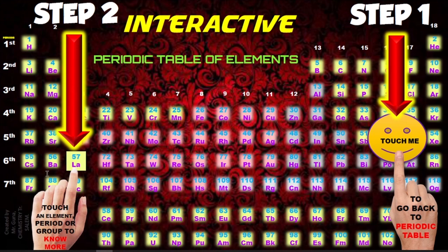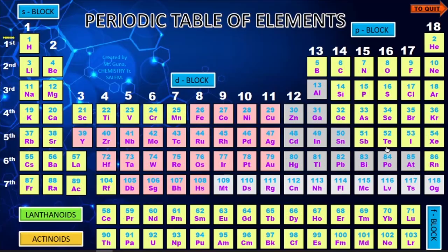When you open this periodic table PDF, you will be taken to the first page — the instruction page. The instructions are very simple. There are only two steps. Step one: click the 'Touch Me' smiley and it will take you to the main part of the periodic table.